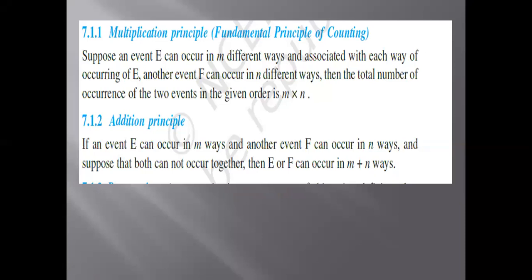We start with the multiplication principle, also called the fundamental principle of counting. Suppose an event E can occur in m different ways, and associated with each way of occurring event E, another event F can occur in n different ways. Then the total number of occurrences of these two events in the given order will be equal to m into n.